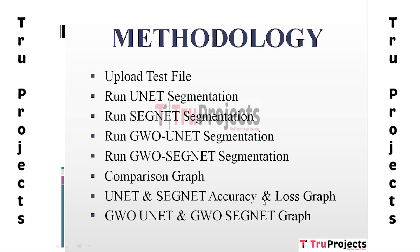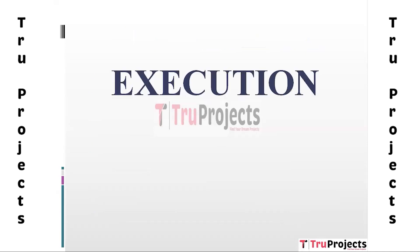The next module is UNet and SegNet Accuracy and Loss Graph, dedicated to plotting the training and validation accuracy and loss curves for both UNet and SegNet models during their respective training processes. This visualization helps in understanding model convergence and potential overfitting. The last module is GWO-UNet and GWO-SegNet Graph, which similarly plots training and validation accuracy and loss curves for both GWO-optimized models.